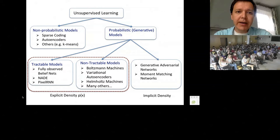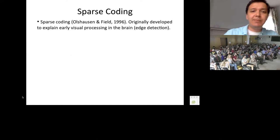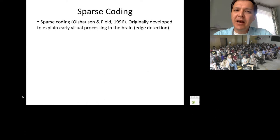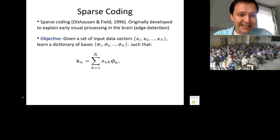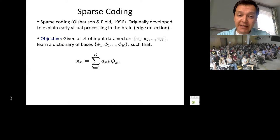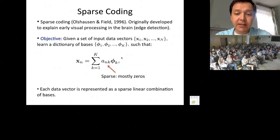Let's start with sparse coding. These are older models but still heavily used across many application areas. Sparse coding was developed by Bruno Olshausen and Field back in 1996 and was originally developed to explain early visual processing in the brain. Given a set of input data vectors X_1 up to X_n, we learn a dictionary of bases φ_1 up to φ_K such that each input can be represented as a sparse linear combination of those bases — meaning the coefficients are mostly zeros.